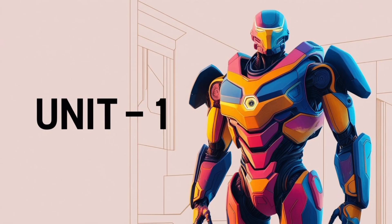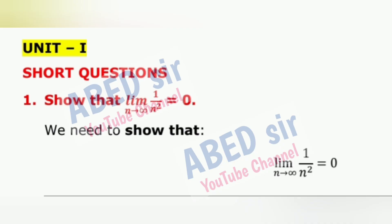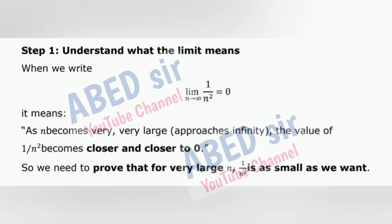Unit 1, First Important Short Question: Show that lim(1/n²) = 0. We need to show that lim(1/n²) = 0. Step 1: Understand what the limit means. When we write this, it means as n becomes very, very large, approaching infinity, the value of 1/n² becomes closer and closer to 0. So we need to prove that for very large n, 1/n² is as small as we want.